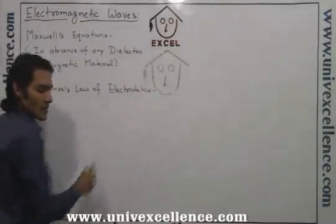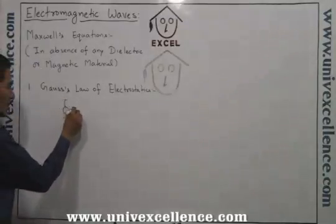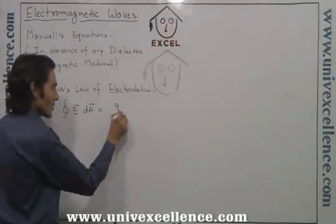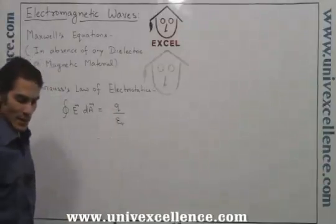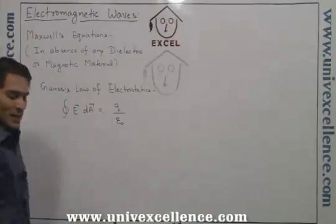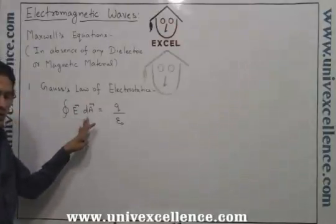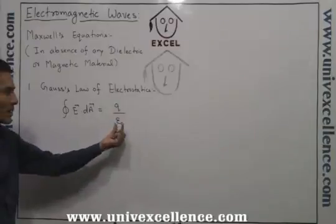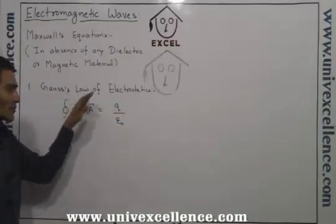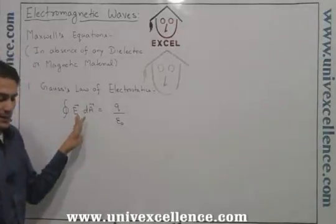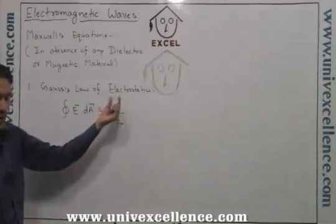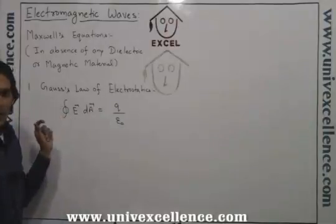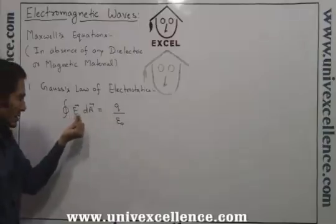According to Gauss law of electrostatics, the area integral of the electric field is equal to 1 upon epsilon-naught times the charge enclosed by that surface. That is, the total electric flux through any closed surface equals the net charge inside the closed surface divided by epsilon-naught. This law relates the electric field to the charge distribution that creates it.